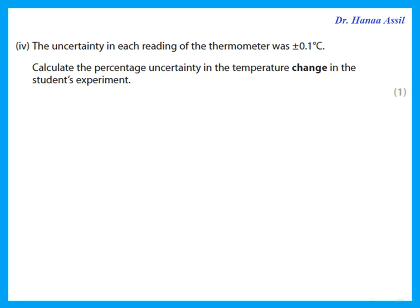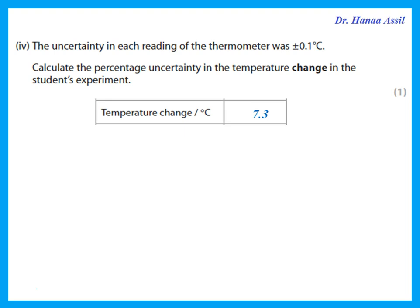The uncertainty in each reading of the thermometer was ±0.1. Calculate the percentage uncertainty in the temperature change. The temperature change was 7.3, and we use the thermometer twice — for initial and final temperature. So the percentage uncertainty is (2 × 0.1) / 7.3 × 100.